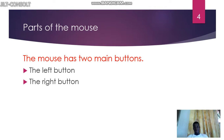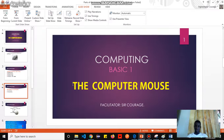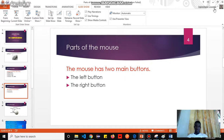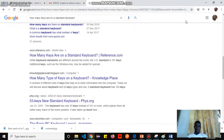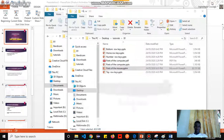You can use the left mouse button to select items on the computer, and we use the right mouse button to see the functions or properties of what you right-click on. Let me demonstrate that — let's go to our desktop.